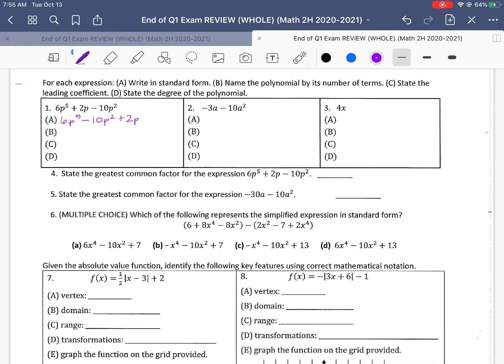B says name the polynomial by its number of terms. There are three terms here, so this would be called a trinomial. Then it says identify the leading coefficient. Remember, the leading coefficient is the number that leads the polynomial when it's in standard form. So in this case, it would be 6. And it says state the degree of the polynomial - if we're stating the degree, that would be the highest exponent. So we look up here, and the highest exponent is 5, so this polynomial has a degree of 5.